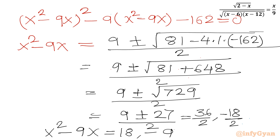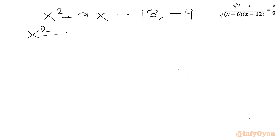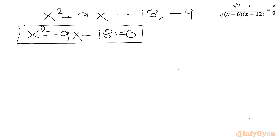We now frame two quadratic equations: first, x squared minus 9x minus 18 equals 0, and second, x squared minus 9x plus 9 equals 0.